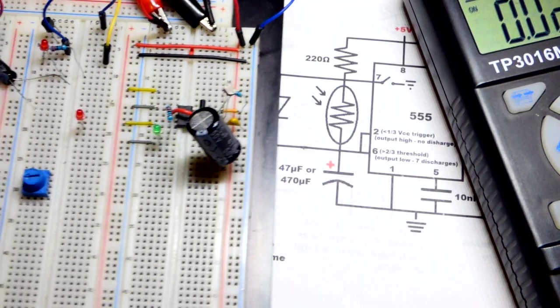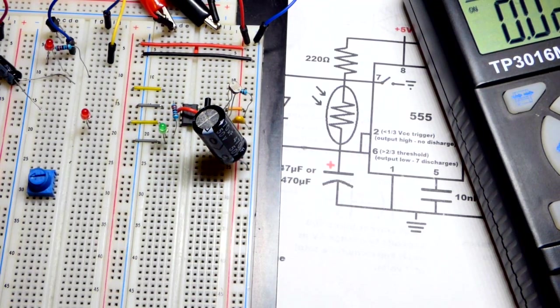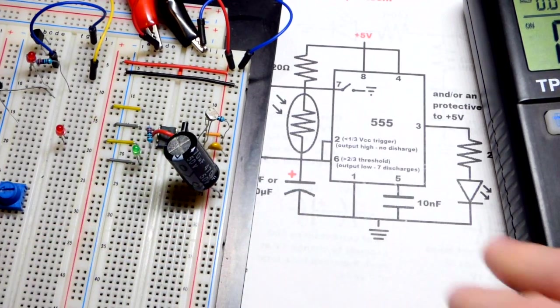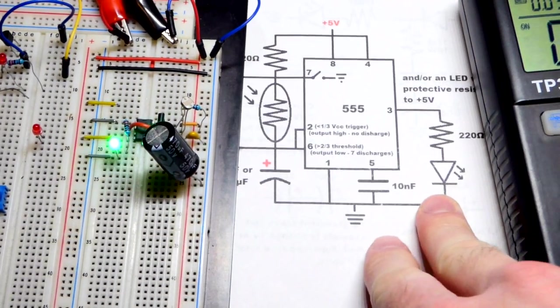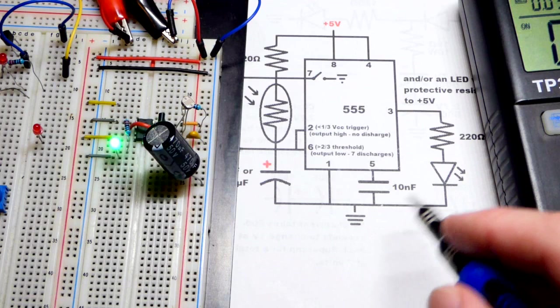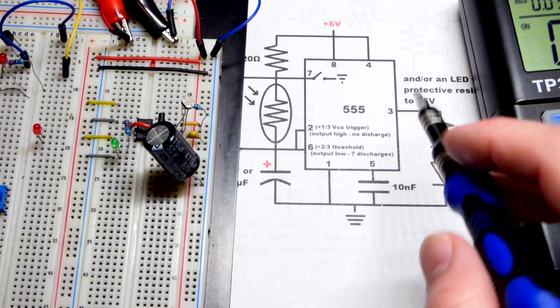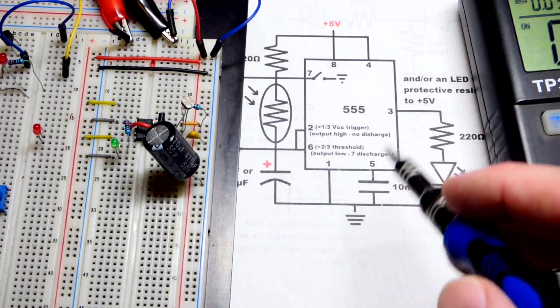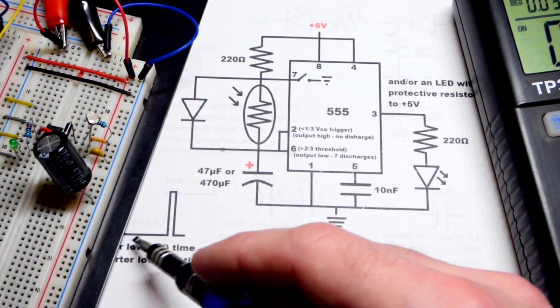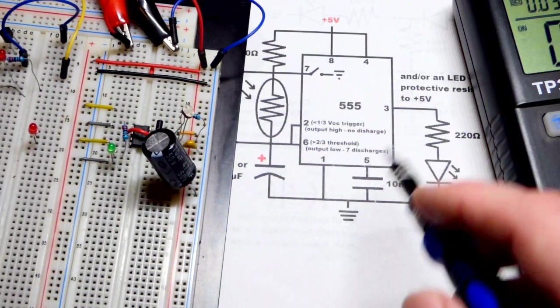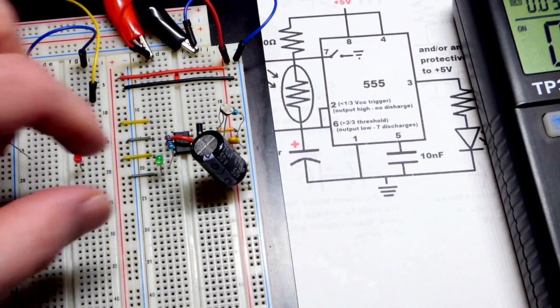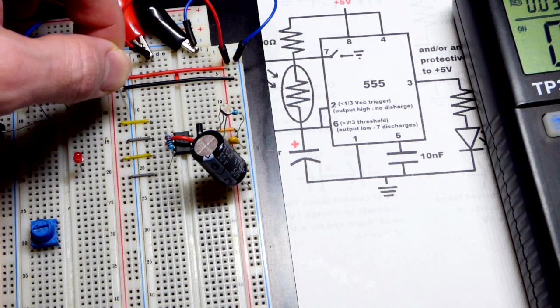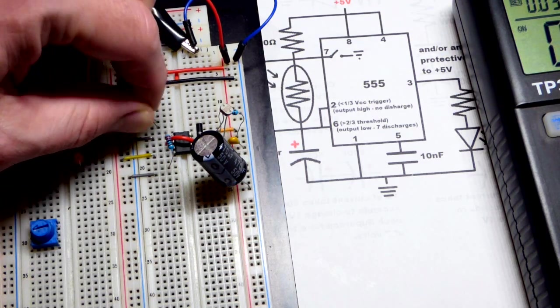So another option that we have is that leaving the setup the same way that we have it now, instead of putting the load to the negative rail, we could have it go to the positive rail. And what that means is that the LED will be lit up while it is a low output right there. So we can do that quickly, just put the long lead, the anode, to this jumper that goes to the positive rail.